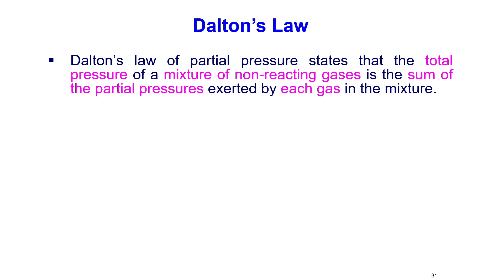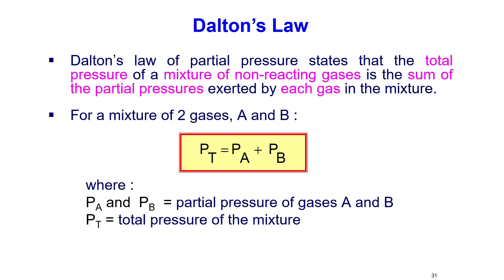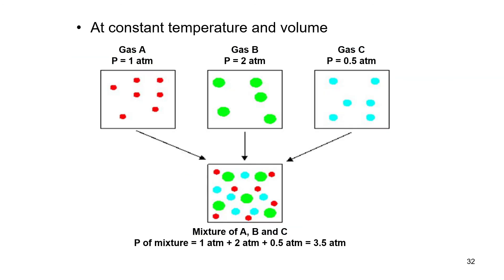Dalton's Law of Partial Pressures states that the total pressure of a mixture of non-reacting gases is the sum of the partial pressures exerted by each gas. For a mixture of gases A and B: P_total = P_A + P_B. For example, at constant temperature and volume, if gas A = 1 atm, gas B = 2 atm, and gas C = 0.5 atm, then P_total = 3.5 atm.